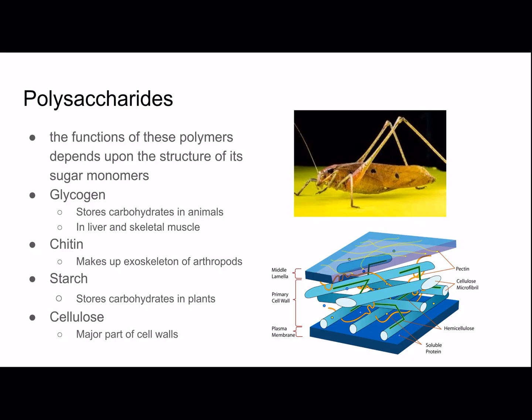They differ because of the way the monomers are put together and their structure. For example, starch and cellulose are both made up of glucose monomers, but starch is made up of alpha glucose and cellulose is made up of beta glucose, which differ in their structure. And that leads to different functions.